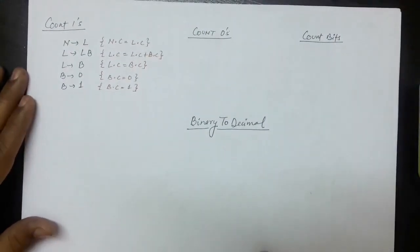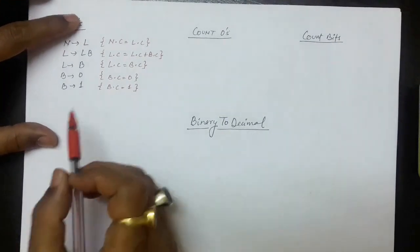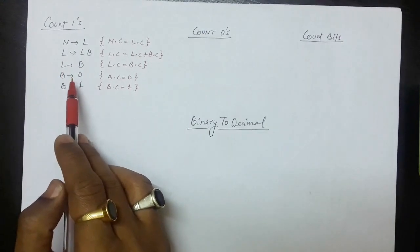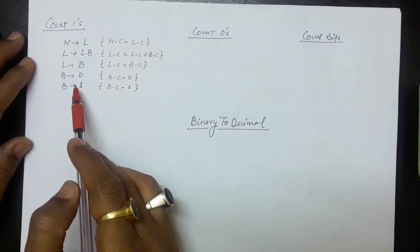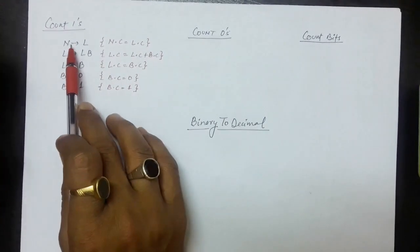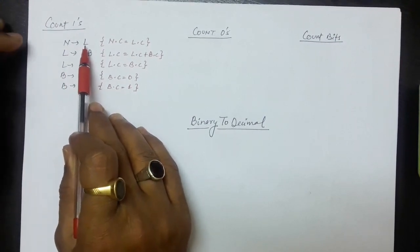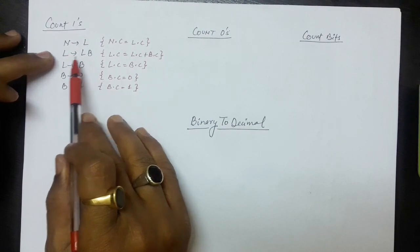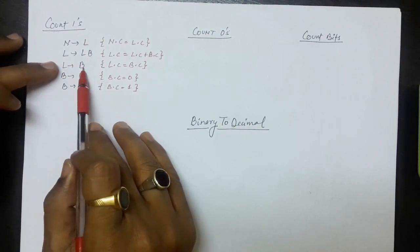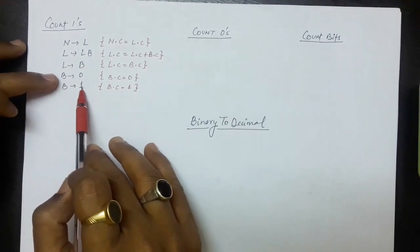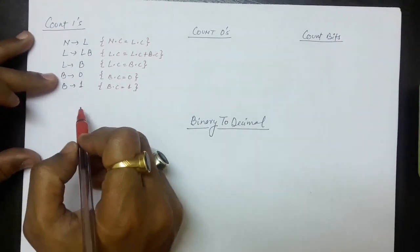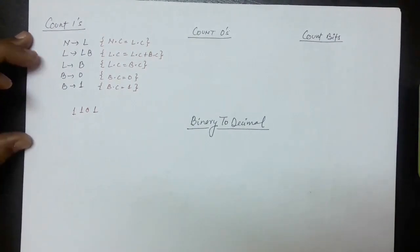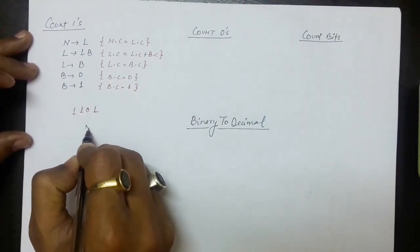Let us take another example. Consider the grammar: n produces l, l produces l b, l produces b, b produces 0, and b produces 1. Here a number generates a list of bits, the list is a list of bits followed by a single bit, and a bit is either 0 or 1. If the string given is 1 1 0 1 and we need to count the number of ones, we first draw the parse tree.